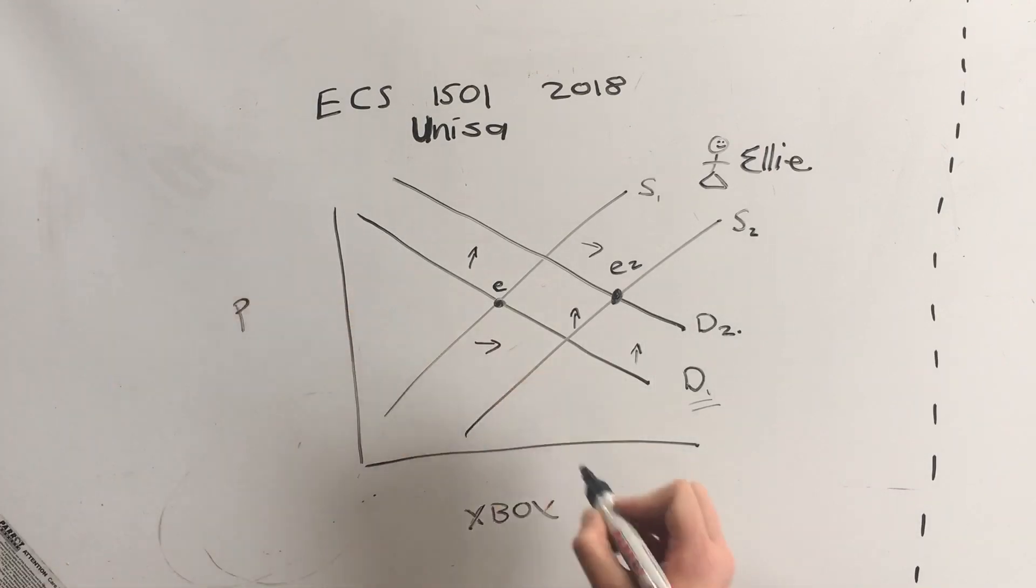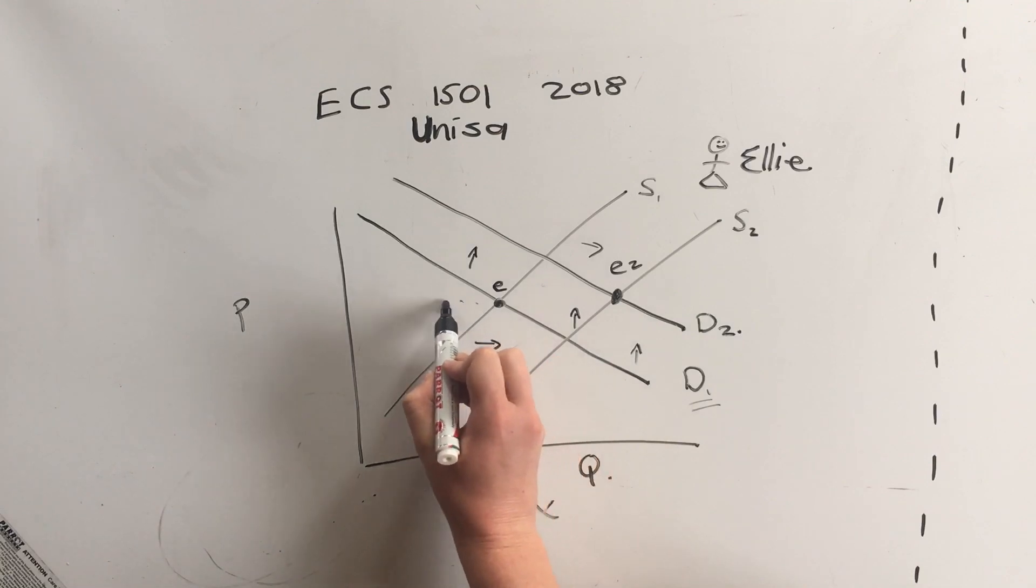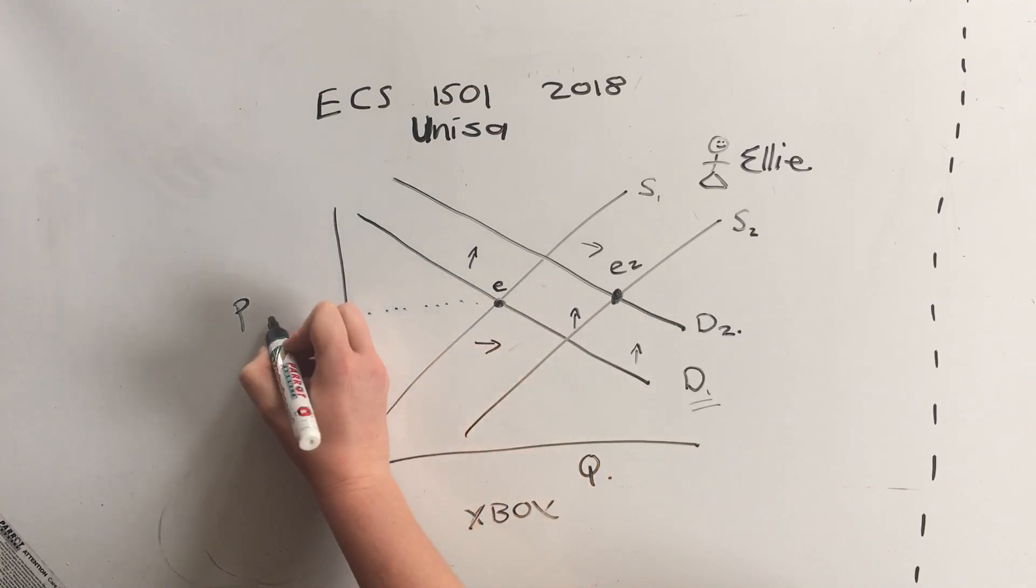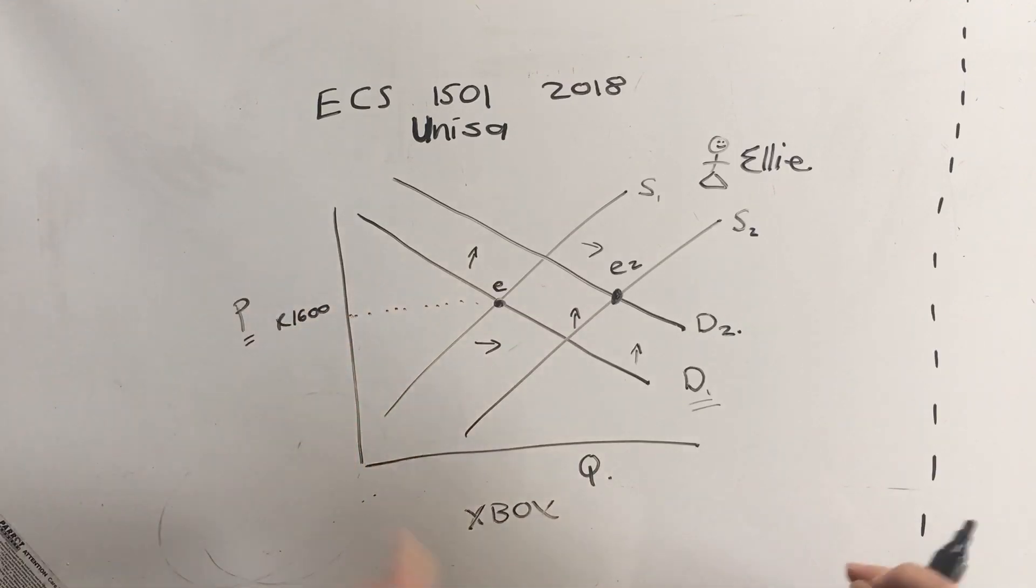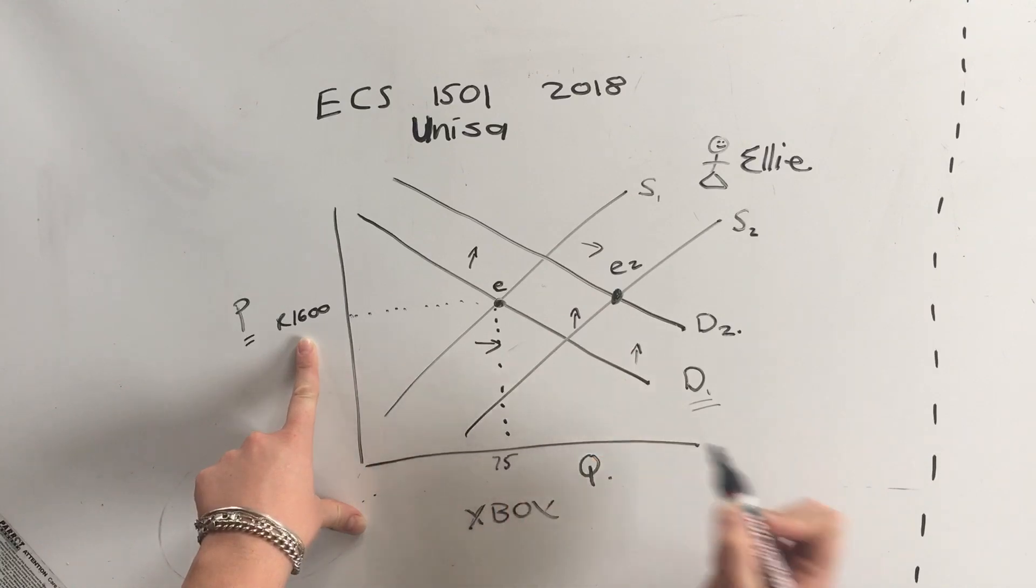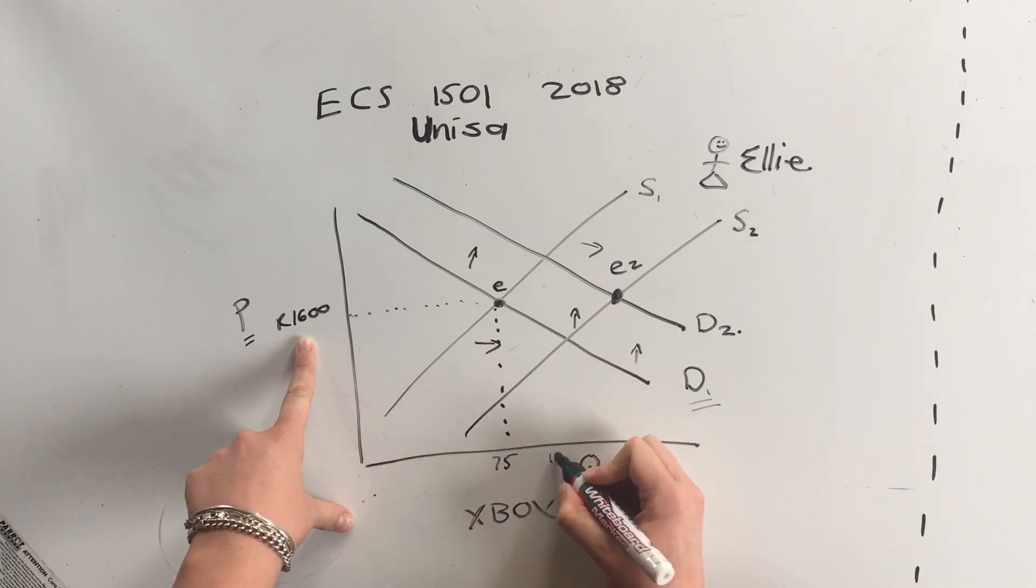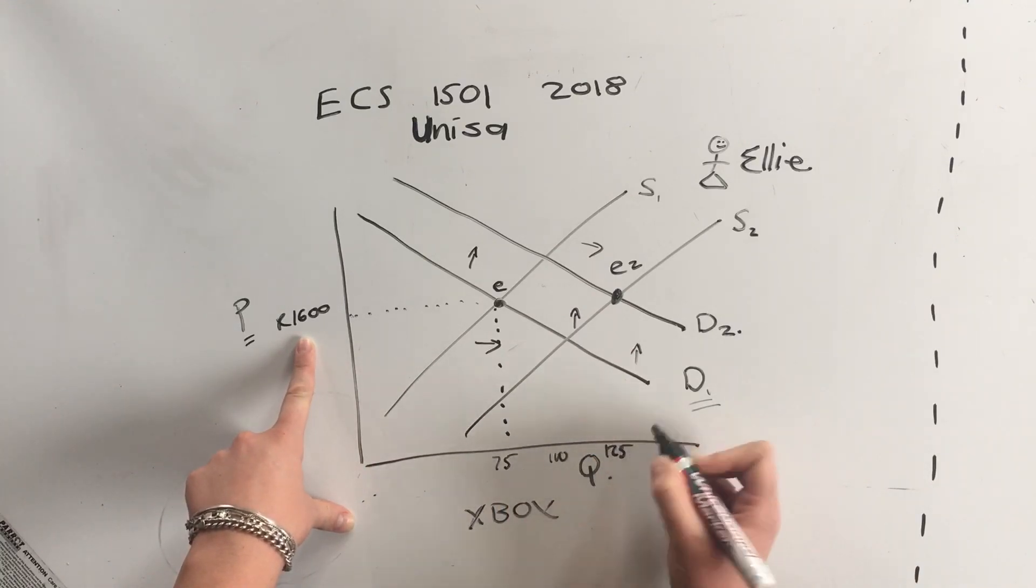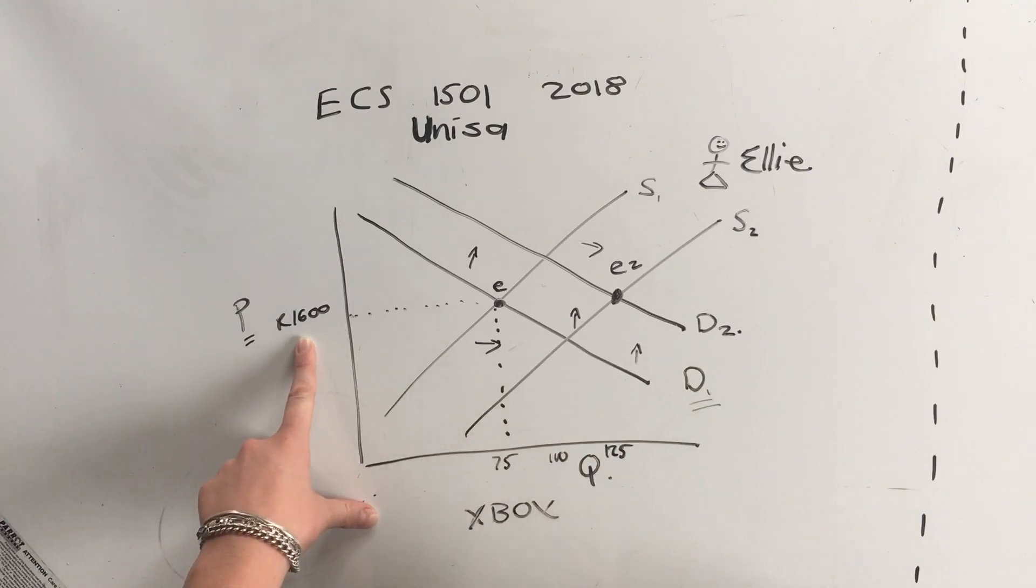What this means for us, remember the price is on this side and quantity is on this side. This means that if the hypothetical price for a second-hand Xbox was a thousand six hundred Rand, remember that's P, and our quantity originally was let's say hypothetically 75, there would have been a hundred and here we're about 125.